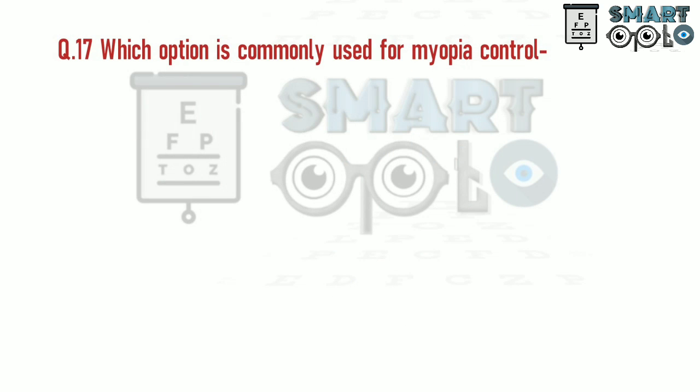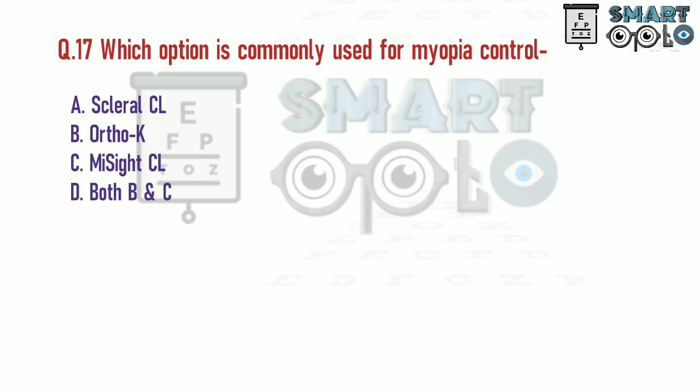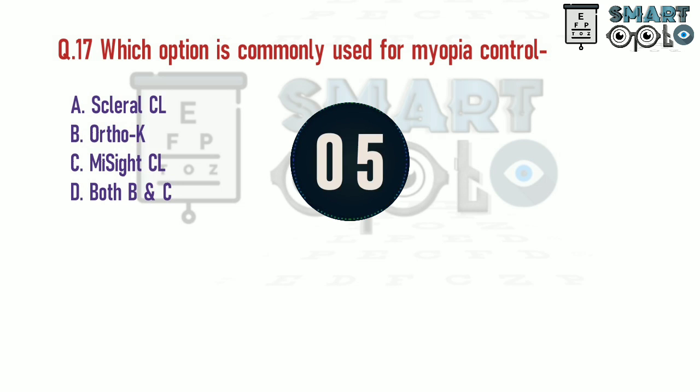Q17. Which option is commonly used for myopia control? A. Scleral contact lenses. B. Orthokeratology. C. Multifocal contact lenses. D. Both B and C.